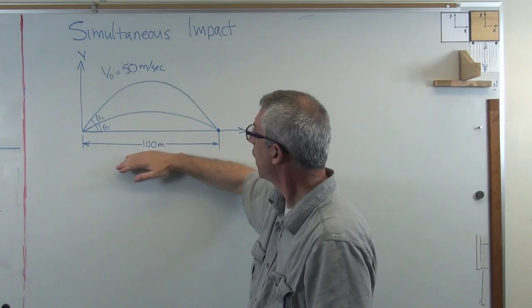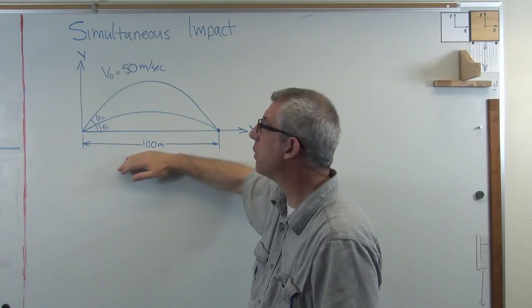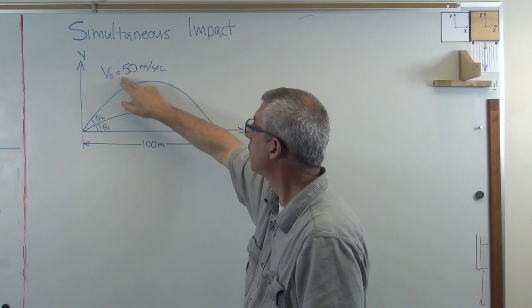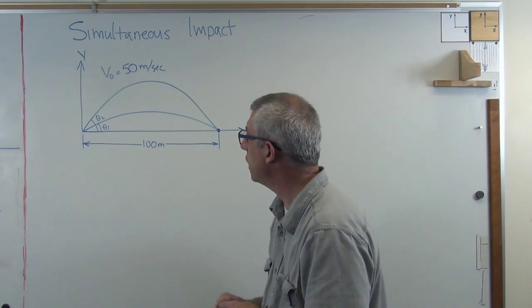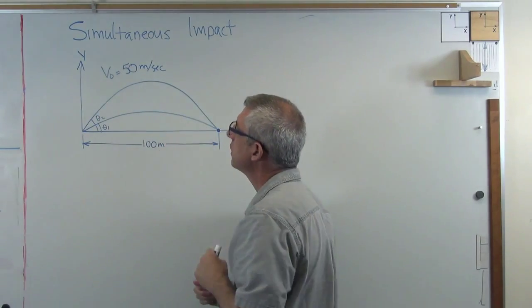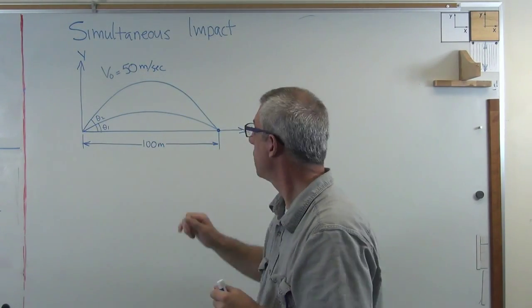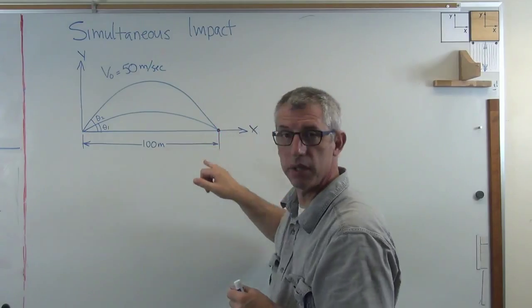Now I'm assuming I've got a target that's 100 meters away from the launch point and I've got an initial velocity of 50 meters per second. What I want to do is see if I can figure out a way to throw two projectiles separated a little bit in time so they both get to the target at the same time.